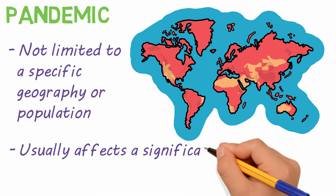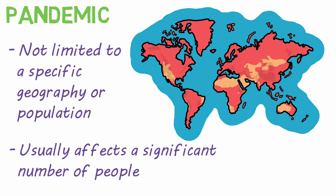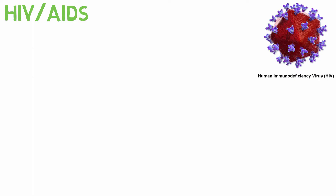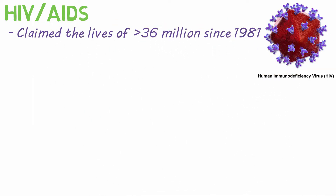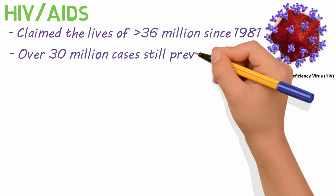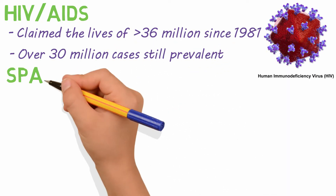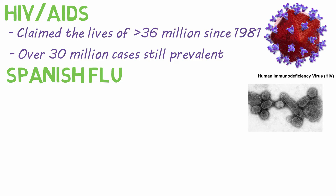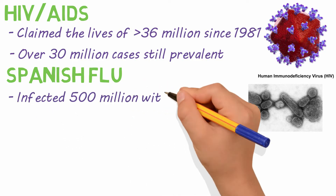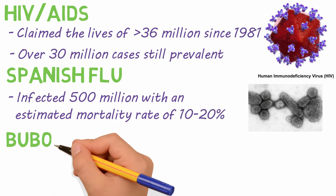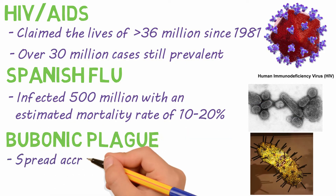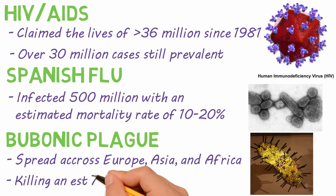It also usually affects a significant number of people. Some of the most prolific pandemics throughout history include the HIV-AIDS pandemic, which has claimed the lives of more than 36 million people since 1981, with over 30 million cases still prevalent worldwide. The Spanish flu in 1918 infected approximately 500 million people and had an estimated mortality rate of 10 to 20 percent. And the bubonic plague, which spread across Europe, Asia, and Africa, killing an estimated 75 to 200 million people.